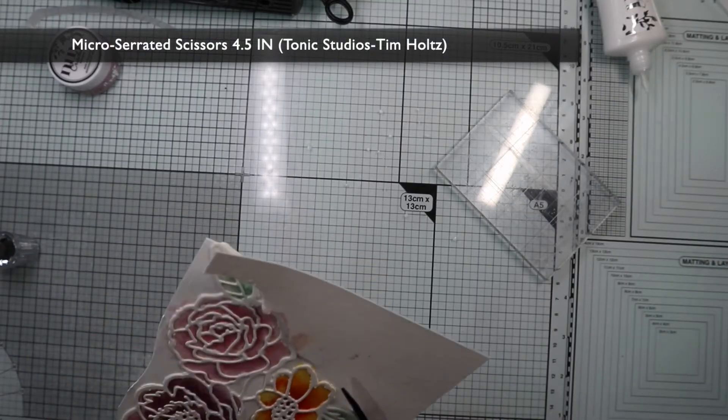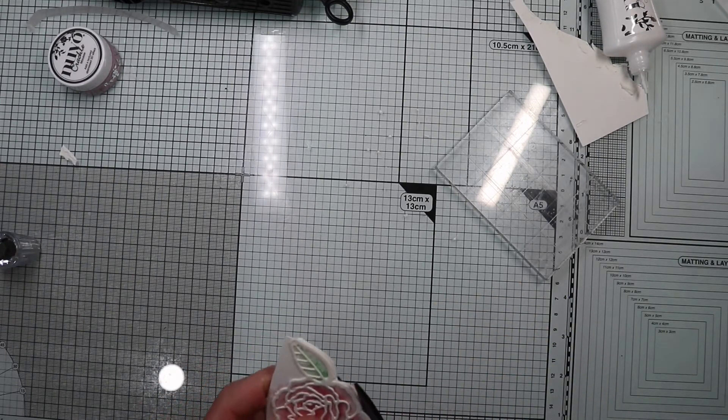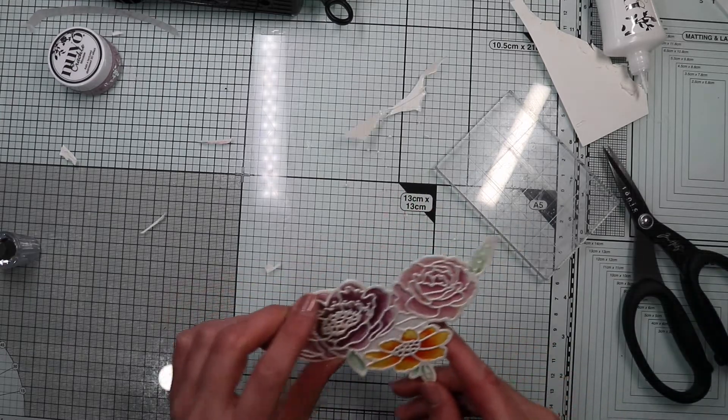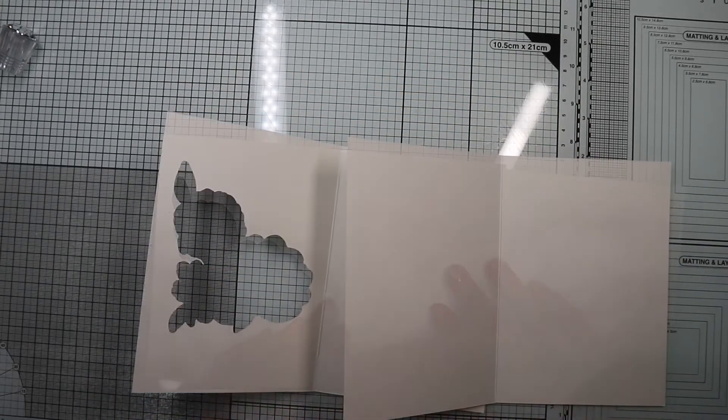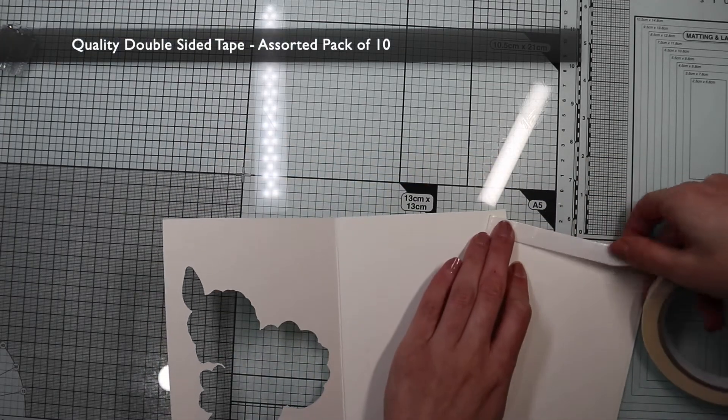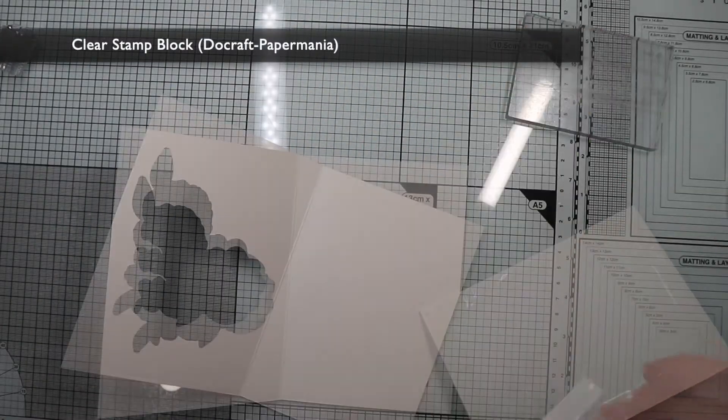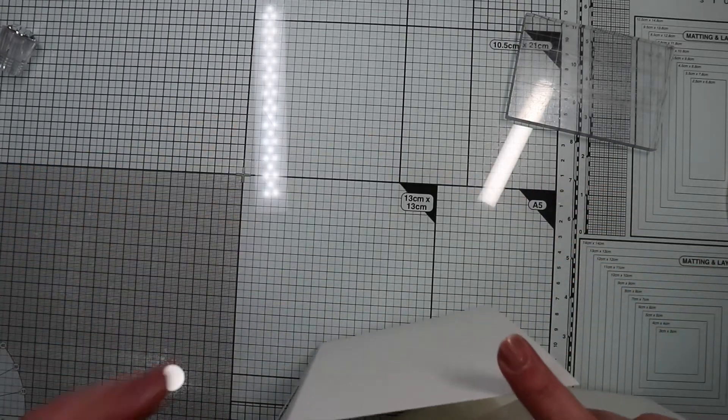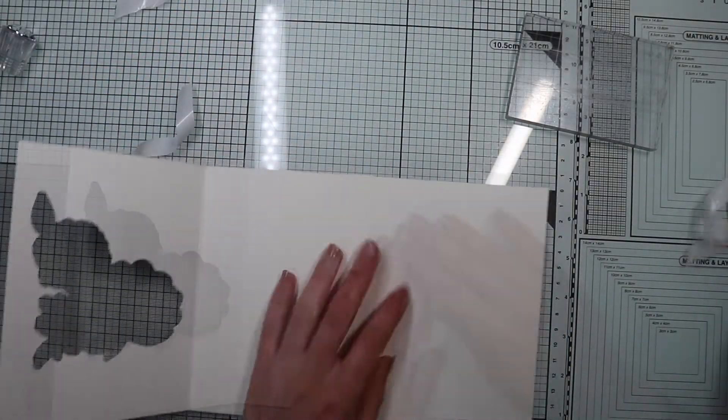Now, I'm going to cut out the excesses following the edges, and the focal point is ready. I assemble the three-fold card, gluing the two card bases by applying double-sided tape adhesive to the back of the right card, and then attaching it to the inner side of the left card. And the card base is ready.